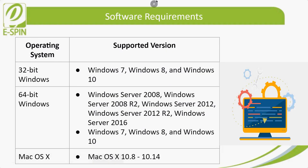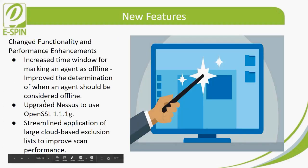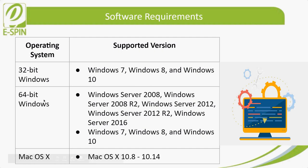For software requirements on Windows and Mac: for 32-bit Windows, users need Windows 7, 8, and Windows 10. For 64-bit Windows, users need Windows Server 2008, Windows Server 2008 R2, Windows Server 2012, Windows Server 2012 R2, Windows Server 2016, as well as Windows 7, 8, and Windows 10. For Mac OS X, the supported versions are Mac OS X 10.8 through 10.14.